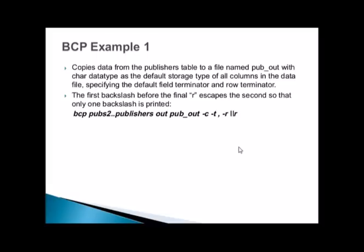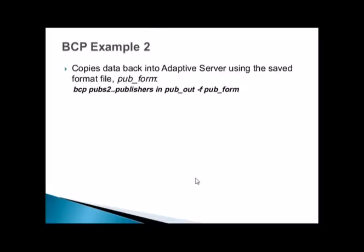Example 1 copies data from the publishers table to a file named pub_out, with character data type as the default storage type for all columns, and specifying default field and row terminators. The backslash before 'r' is an escape character for the Unix/Linux environment so the shell does not interpret it. The command is: bcp pubs2..publishers out pub_out -c -t '\t' -r '\r'.